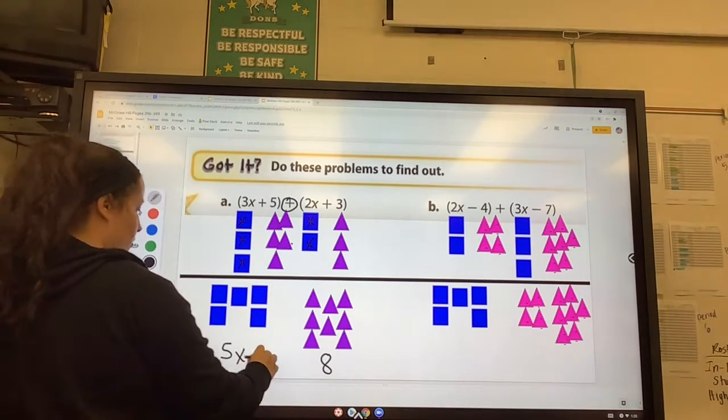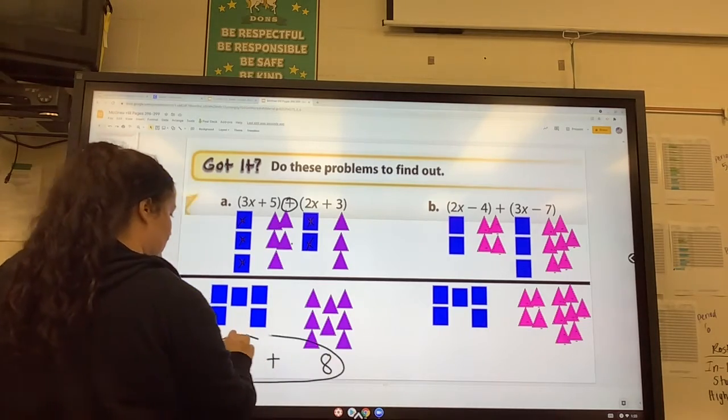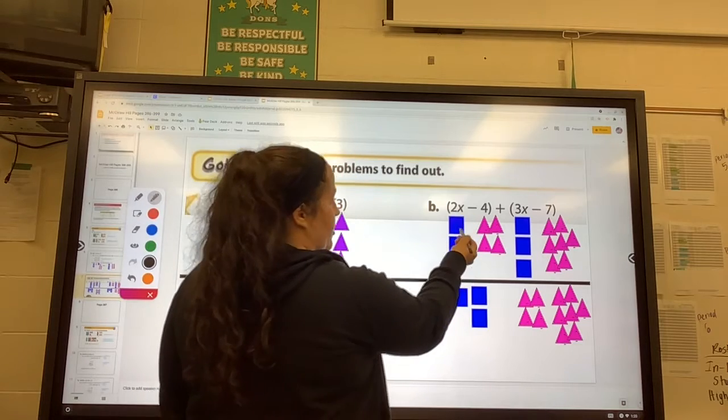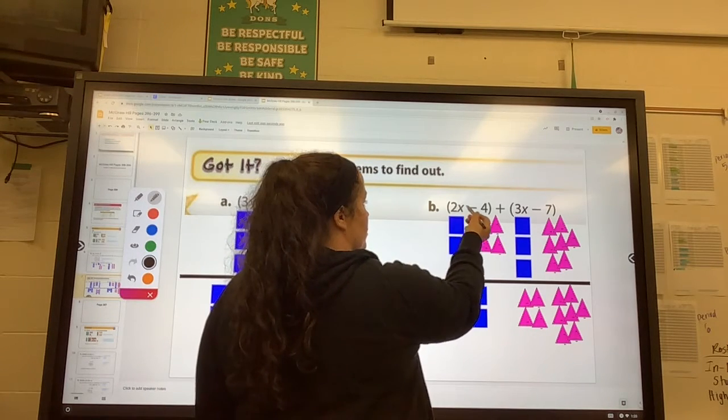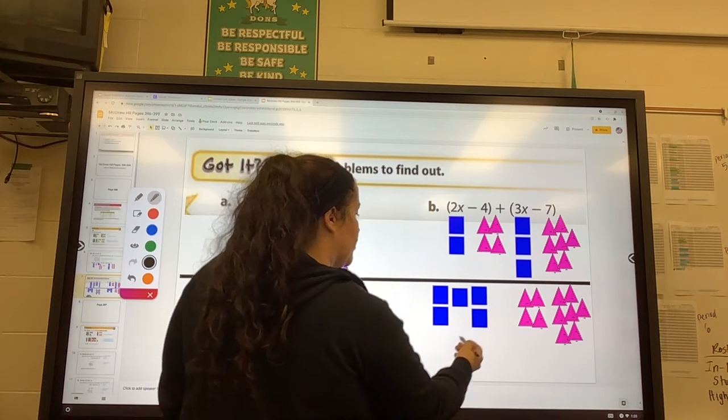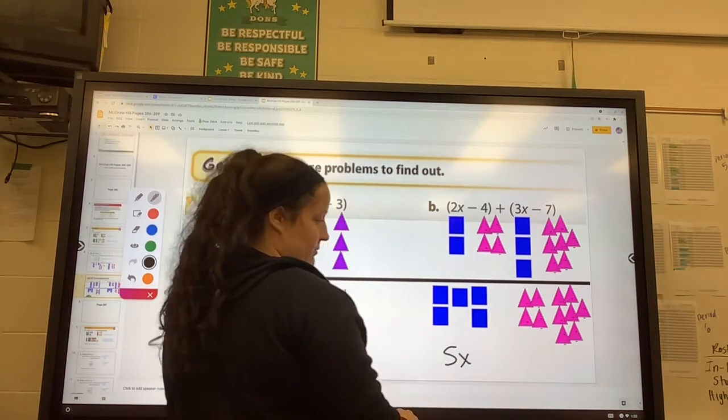The next one, x still stands for the blue box. So there's two blue boxes and three blue boxes, which are five blue boxes or five x boxes.